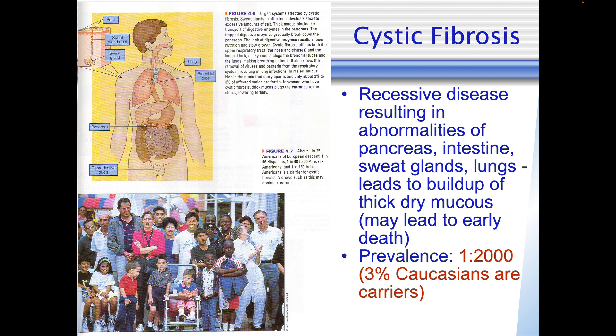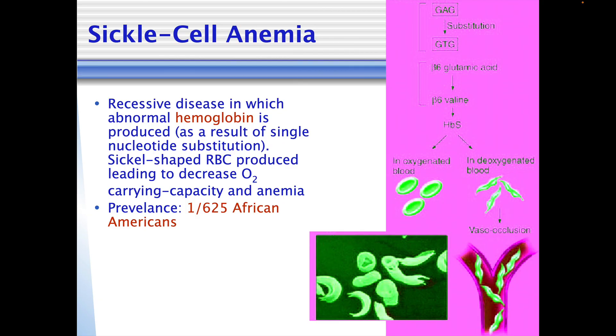Cystic fibrosis is again a recessive type of disorder and can result in some very serious symptoms. Sickle cell anemia is another recessive type of disorder — it results in abnormally shaped red blood cells which can get clogged in arteries and cause problems. These occlusions, as they're called, clot arteries up. But sickle cell does have the benefit of giving some resistance to malaria.